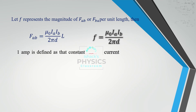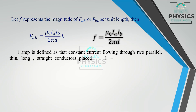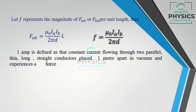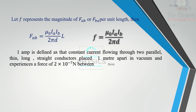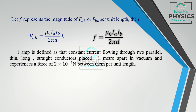Using this, we define 1 Ampere of current. One ampere is defined as that constant current flowing through two parallel thin long straight conductors placed 1 meter apart in vacuum, and experiencing a force of 2 × 10⁻⁷ N per unit length between them.